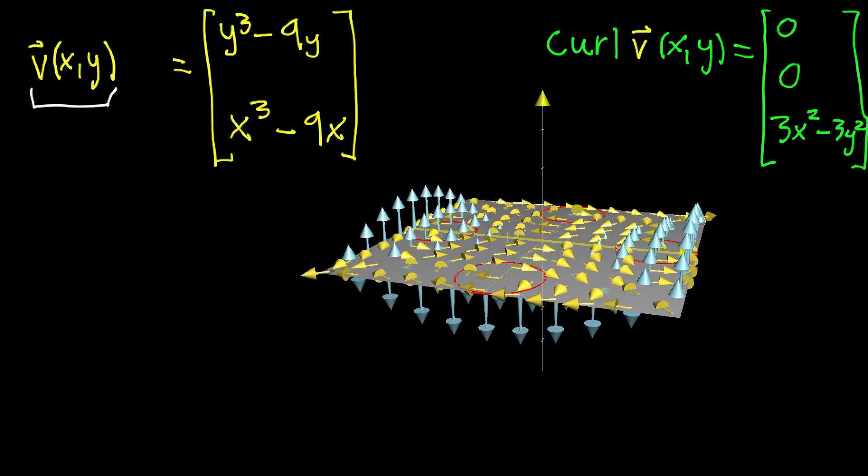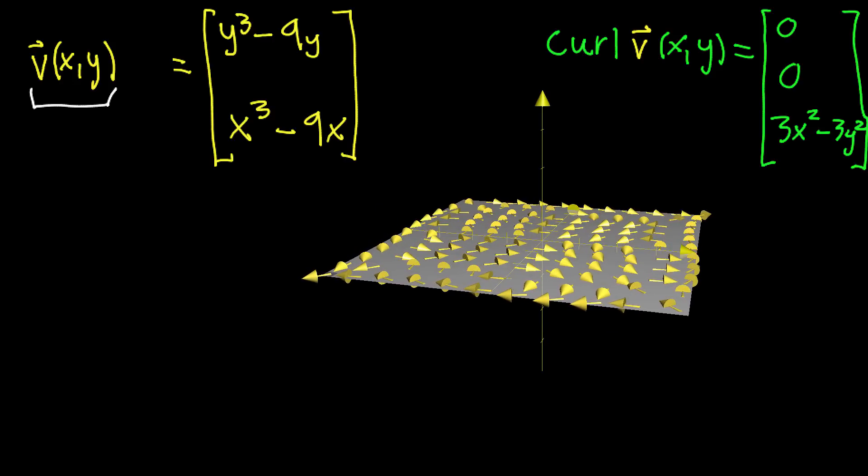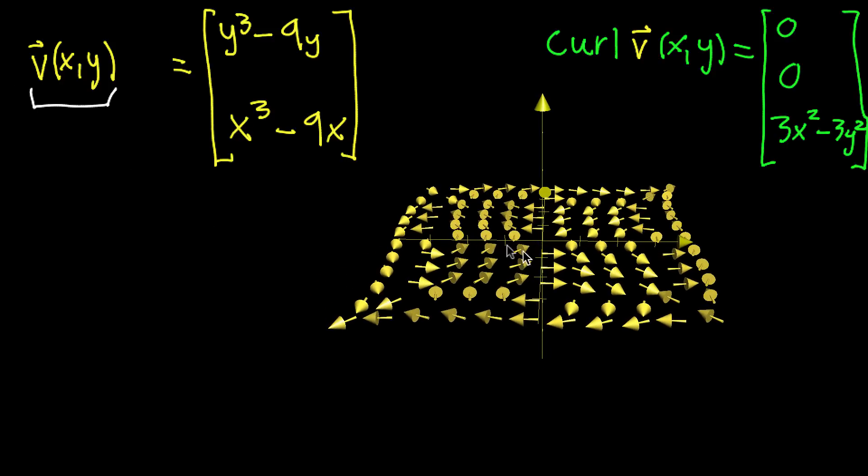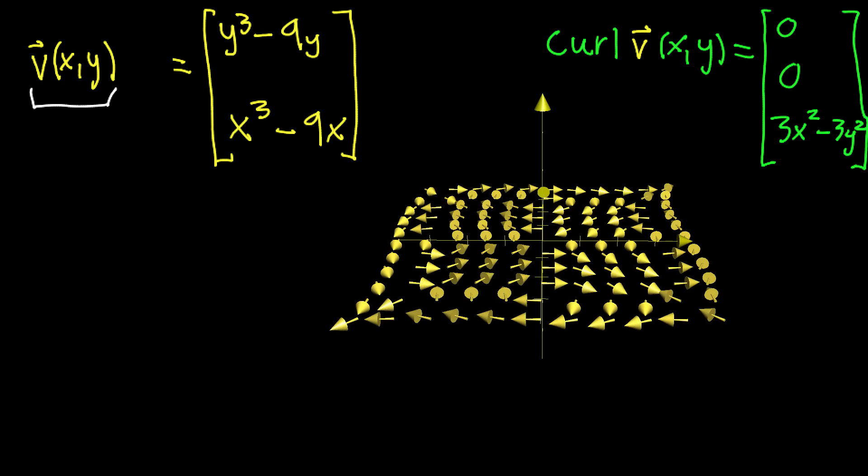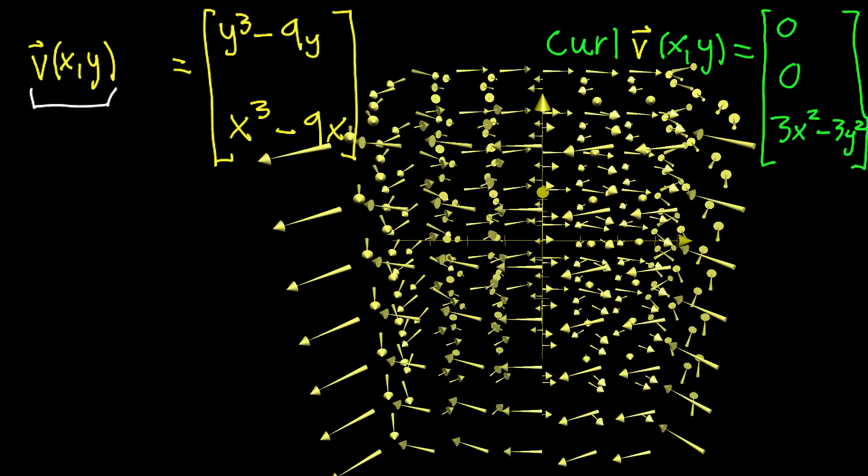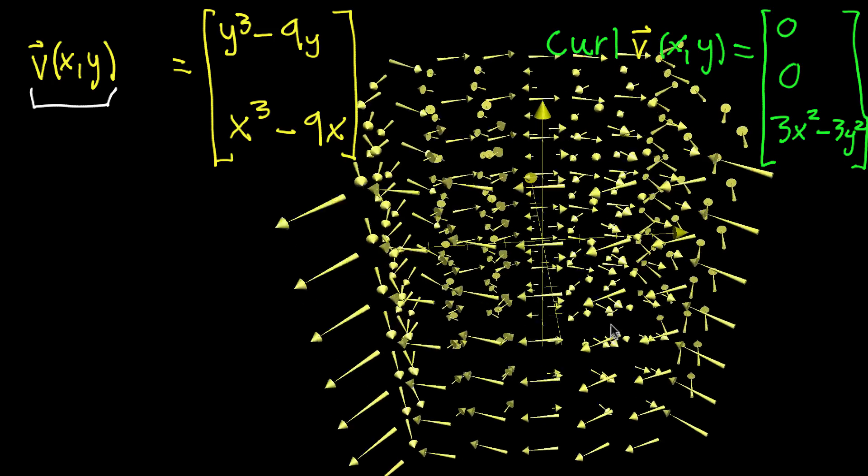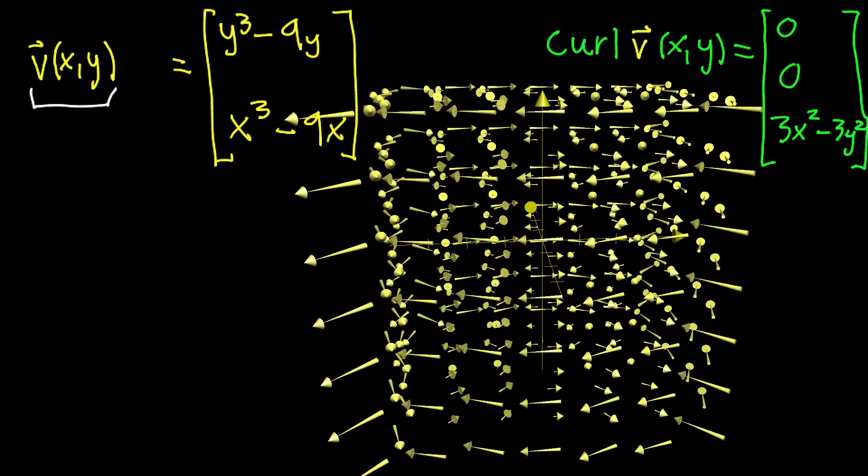And one idea you might have, so we'll get rid of the circles and the plane, is to take this vector field and then just copy it into different slices. So you might get something kind of like this.